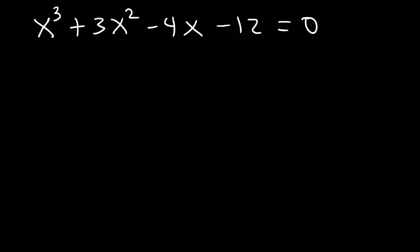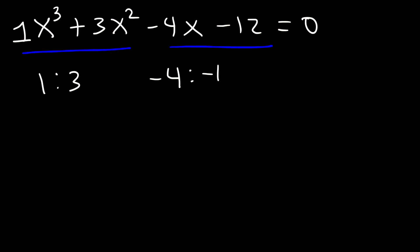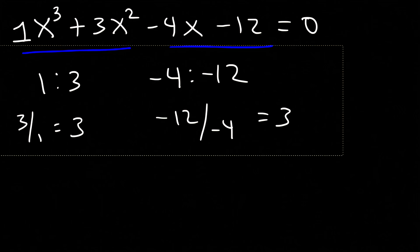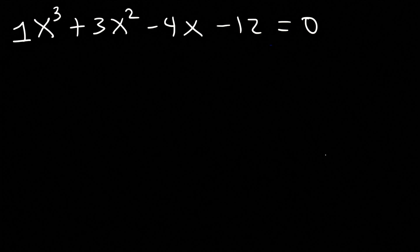Notice that the ratio of the first two coefficients is the same as the ratio of the last two. For example, 1 and 3 has the same ratio as negative 4 and negative 12. Negative 12 divided by negative 4 is equal to 3, and 3 divided by 1 is 3. Whenever you see that, you can factor by grouping — that's the fastest way to get the answer.